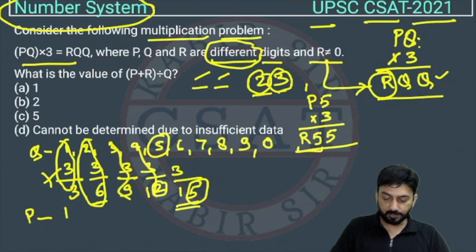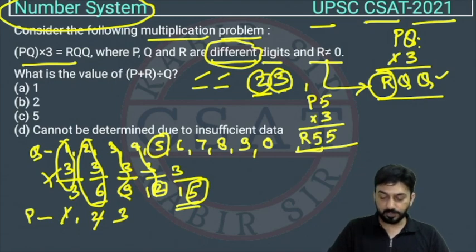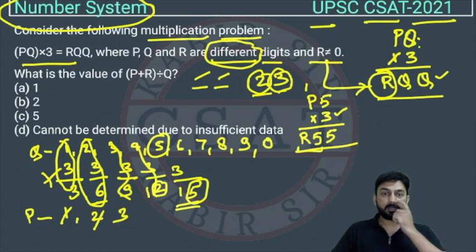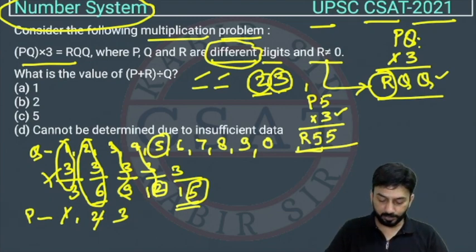If we are taking P as 1, then we will get 1 digit number because 3 into 1, so 3 plus 1 is 4. We will get only 4, so 1 is not possible. Now 2, 3 into 2 is 6, we are getting single digit. Now 3, 3 into 3, I am multiplying it with P. This is a multiplication problem. If I am putting value of P as 3, then 3 into 3 is 9 plus 1 is 10. We will get 10 but here we are getting 5, so this 3 is also not possible.